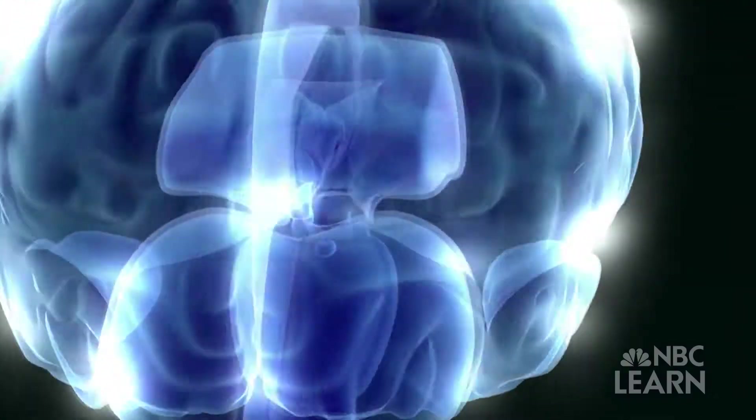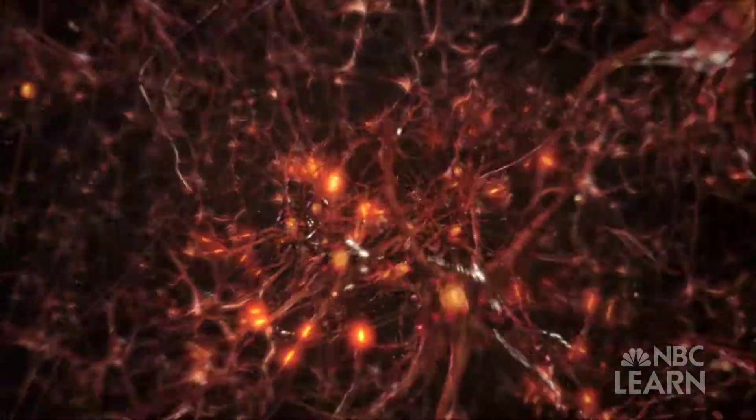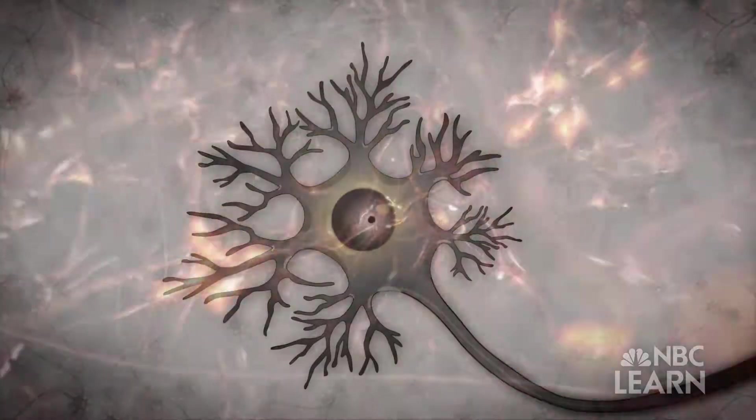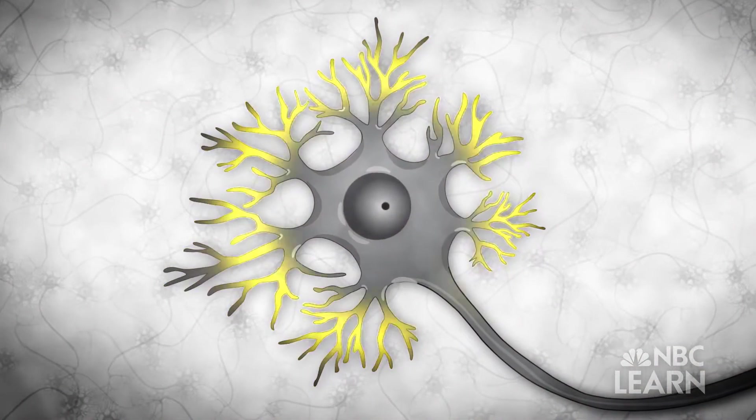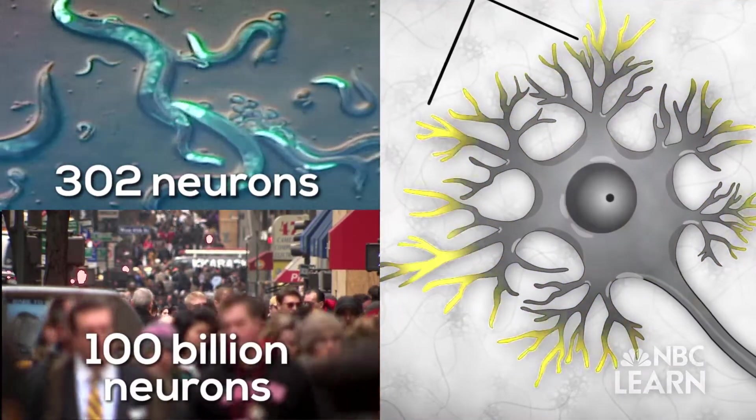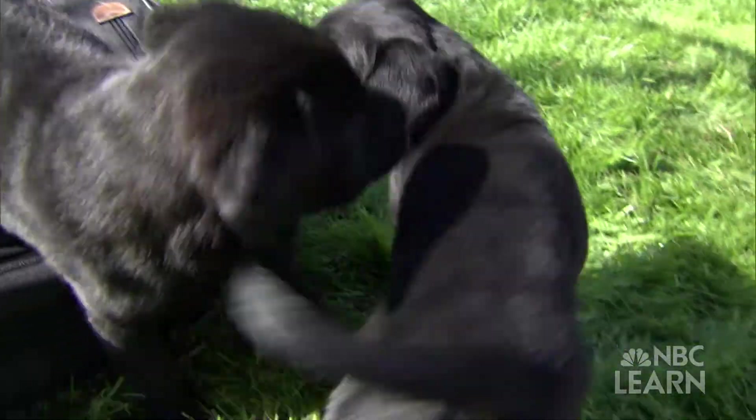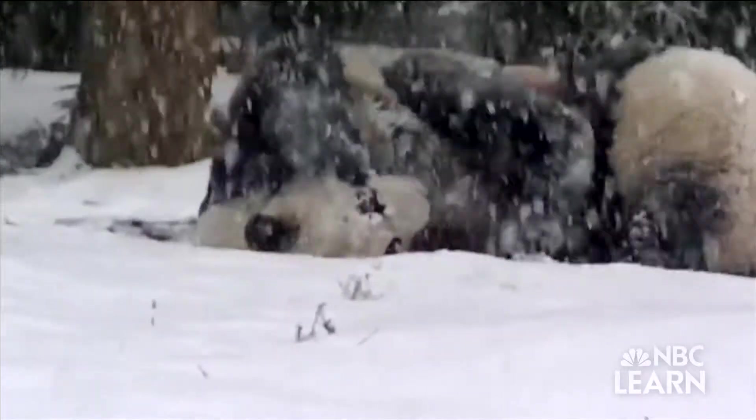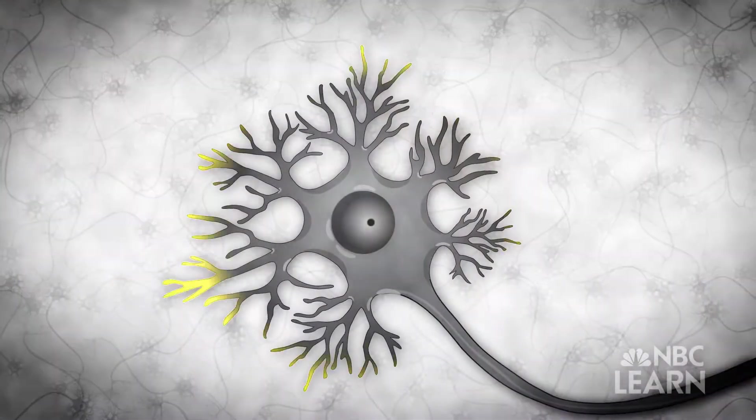To process, organize, and store all the information, the brain employs cells called neurons. Neurons are basic to all brains, from roundworms to humans. When a puppy sniffs out a new playmate or a panda discovers snow, the information in the form of electrochemical signals is received.